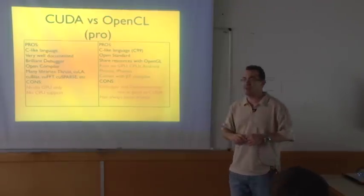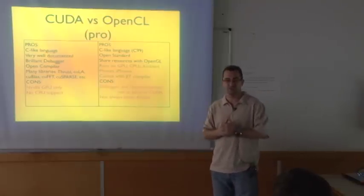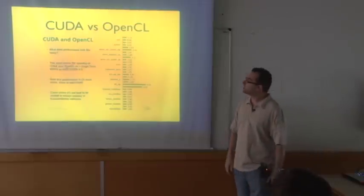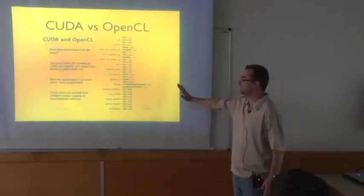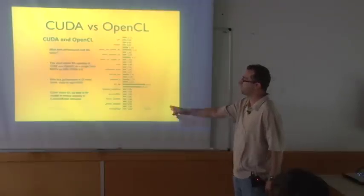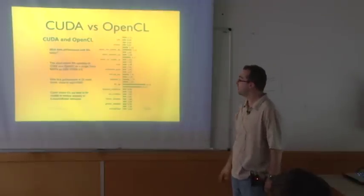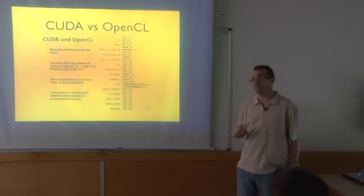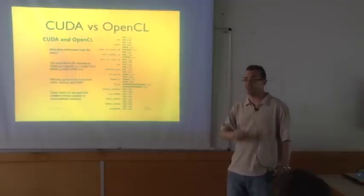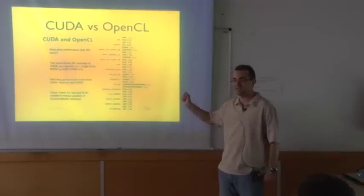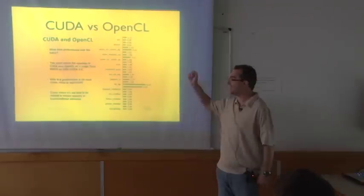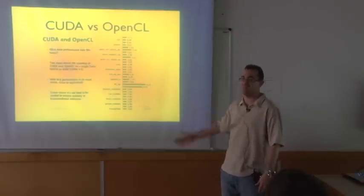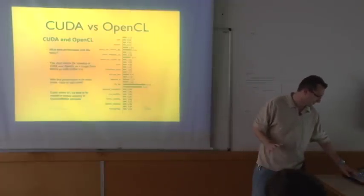The cons of OpenCL are that documentation and debugging are not as good as CUDA, and even though many vendors support it, they don't always have the latest drivers. Performance-wise, this is about a year-old test, but the ratio between CUDA and OpenCL is almost always one. There are two FFT tests where CUDA is about six times faster, but that's because they optimized the CUDA code and didn't try to optimize the OpenCL code. In other cases they optimized both, and performance is within plus-or-minus 10%.